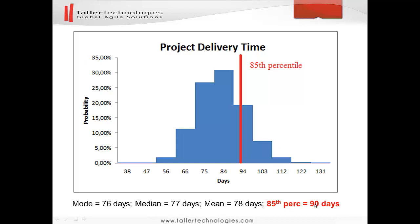The 85th percentile for this project is 90 days. So if we run the same project seven times in a row, six out of seven will hit this delivery time of 90 days. That is the value we will be using for high-level planning and communicating to our clients. Please download the Excel files, put your data in them, run the simulation, and see what will happen. Ask questions if you have any, and my hope is that you will start using this approach for high-level planning of your projects. Thank you very much and bye.